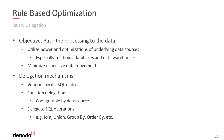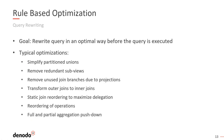Even if you have custom functions, we have the ability to delegate down to functions in the underlying databases. For example, string functions are standard in all databases, but if you've created your own custom function in SQL Server, we can leverage that by simply registering that function in Denodo — a very powerful capability that not many people are even aware of. The optimizations applied in the rule-based phase are based on a set of rules, and what we know about the incoming query to minimize the actual amount of SQL sent down to the underlying systems.